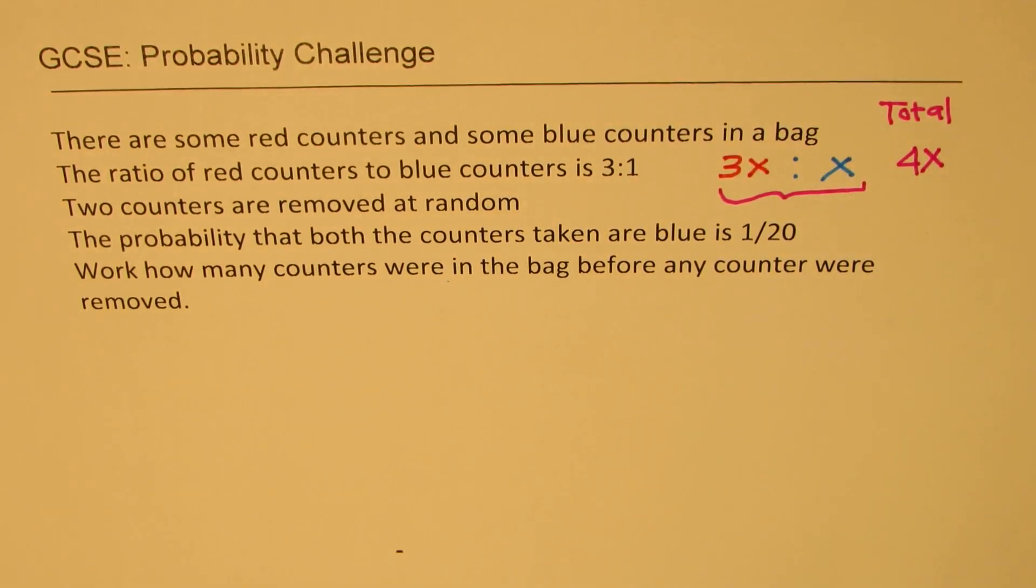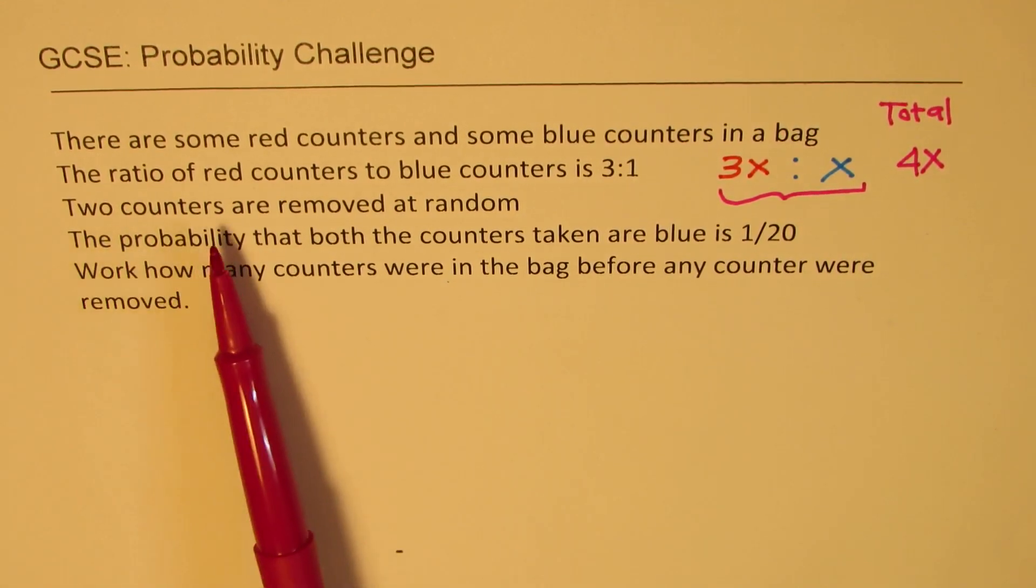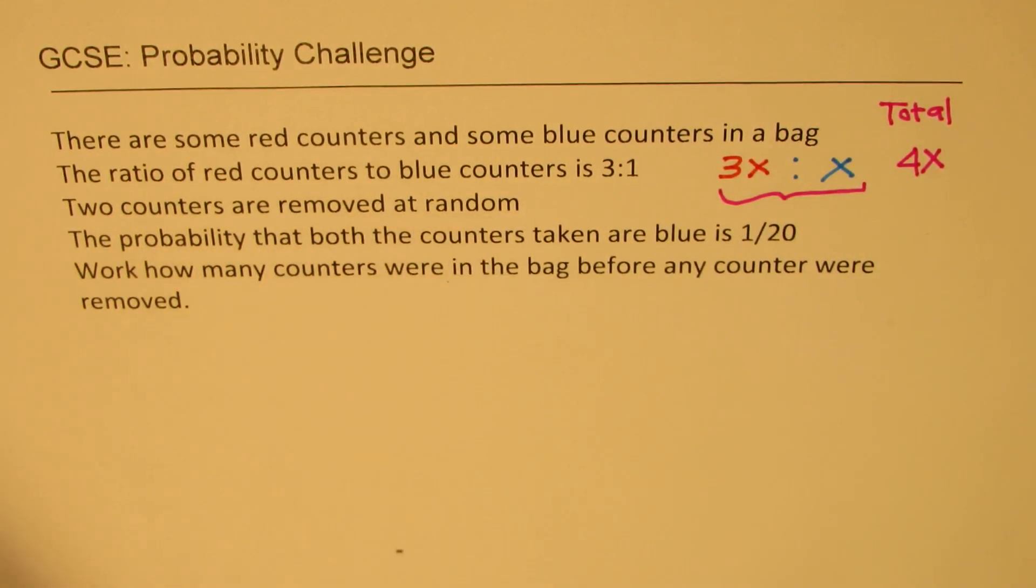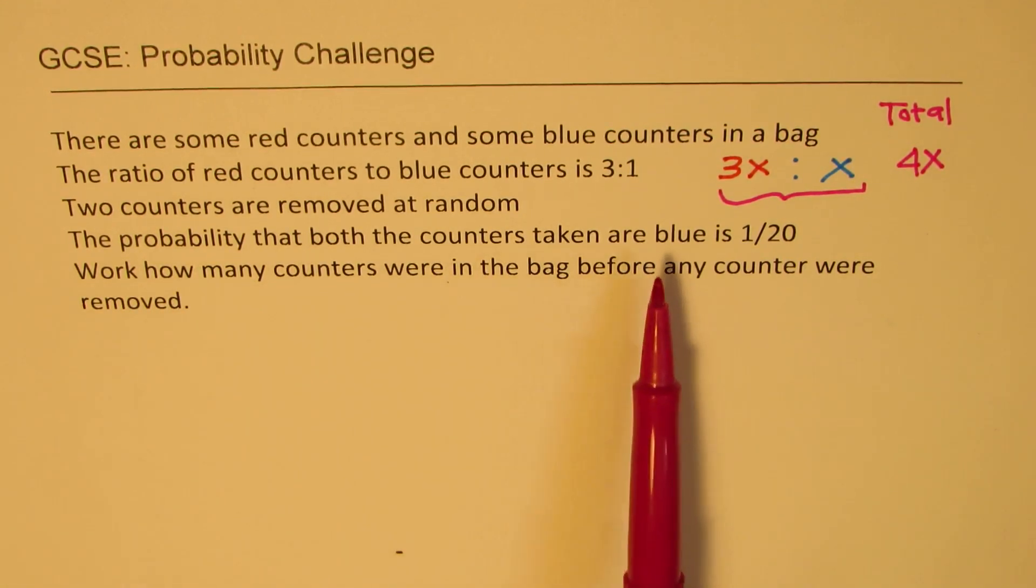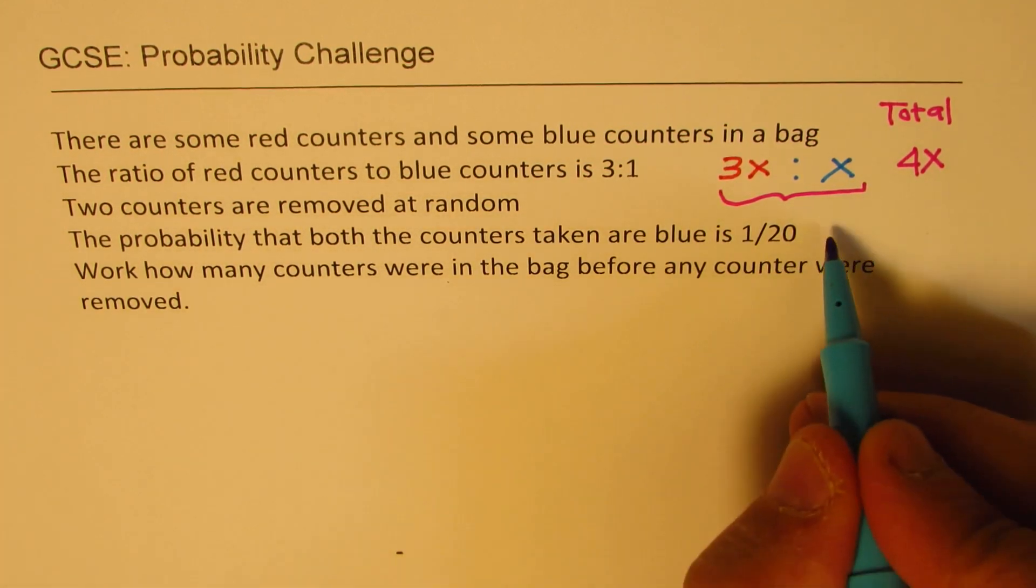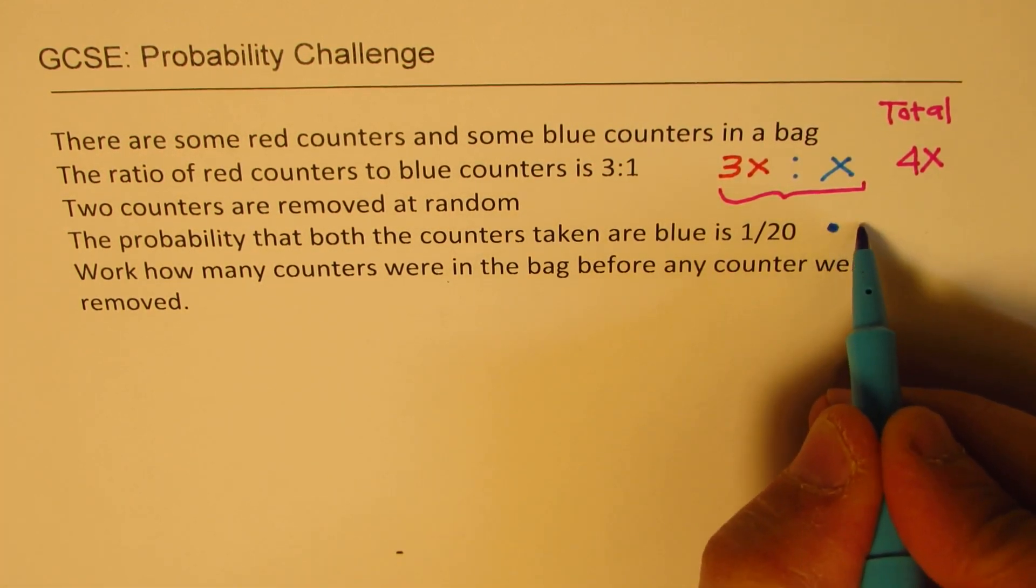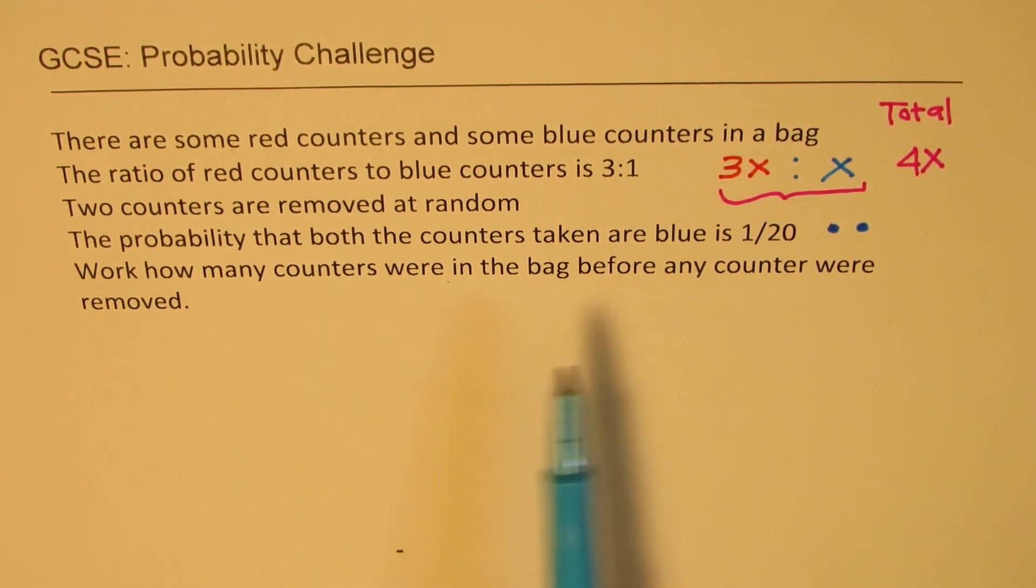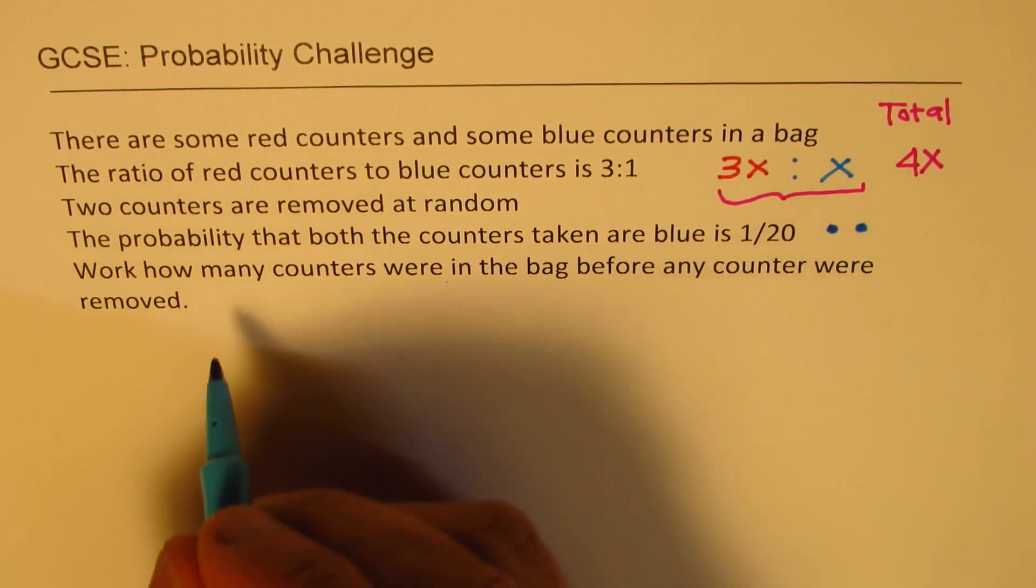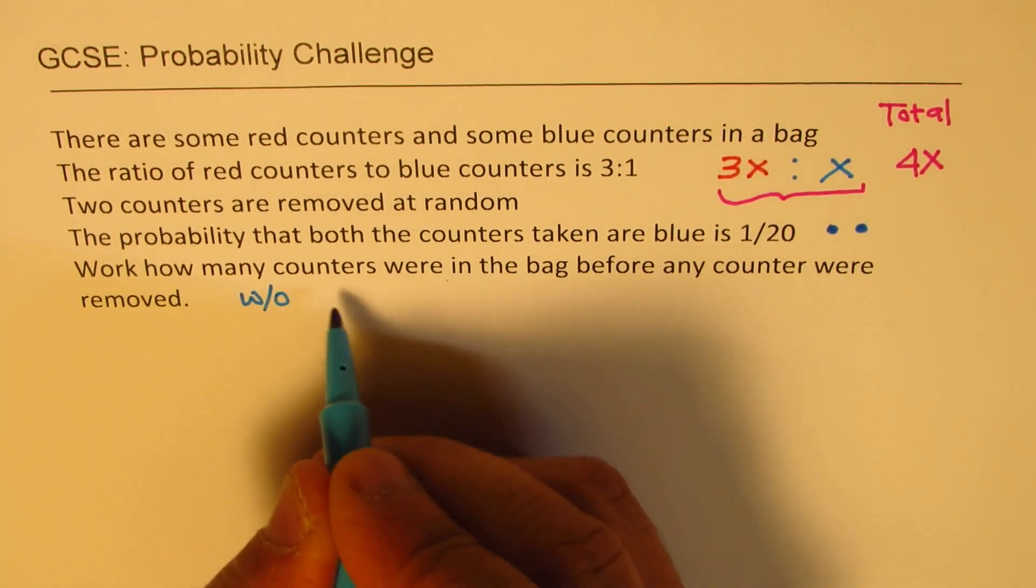In probability, the denominator is total. Now it says two counters are removed at random. The probability that both the counters taken are blue is 1 over 20. So we are taking out 1 and then again 1 and both are blue. So that statement clearly shows that it is without replacement.